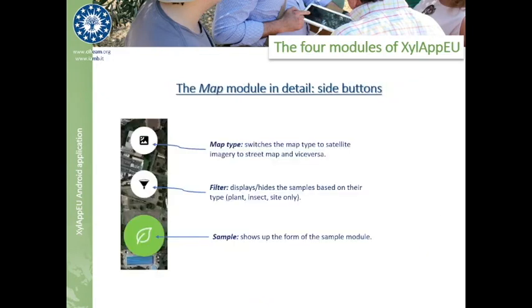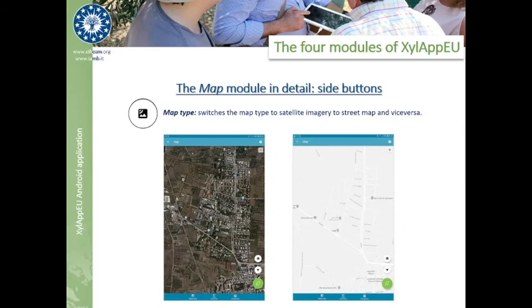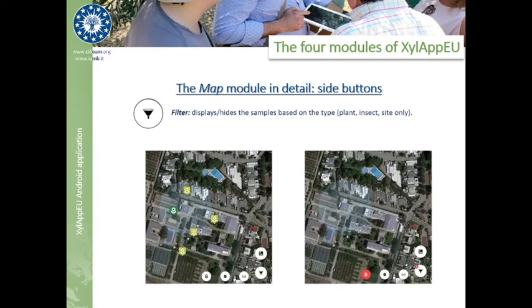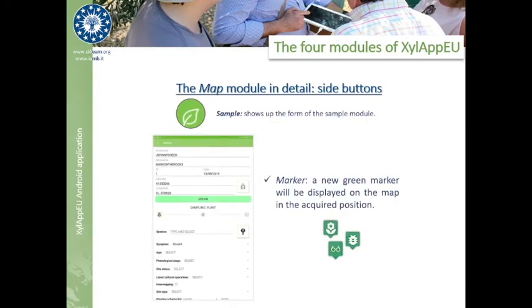On the right side of the Map module there are three utility buttons: the Map Type button, that switches the map type from satellite imagery to street map and vice versa; the Filter button, that displays or hides the samples based on their type; and the Sample button, that loads the form of the Sample module. On the left is the terrain map showing satellite images, and on the right side the vector map that shows the streets. This is also the effect of filtering plant samples on the map, in order to make it neater in the case of crowded marker clusters. As soon as the saving of a sample is done, the corresponding green marker will be placed on the map.